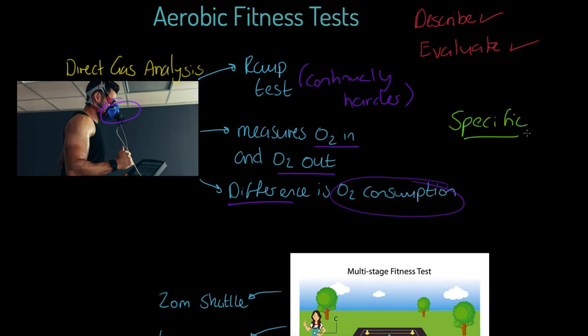So we can specifically measure oxygen consumption at different intensities of a specific exercise. I just write down the word specific. This is really specific. We will know the exact oxygen volume for the exact measure of intensity.